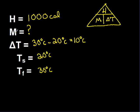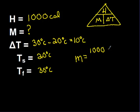To solve for mass, I'm going to look at my pyramid, cover up M, and I see that mass equals heat divided by change in temperature. Setting up the equation: mass equals 1,000 calories on top. Instead of writing calories, I'll write grams degrees Celsius — because that's what a calorie comes from — and on the bottom I put my change in temperature, which is 10 degrees Celsius.